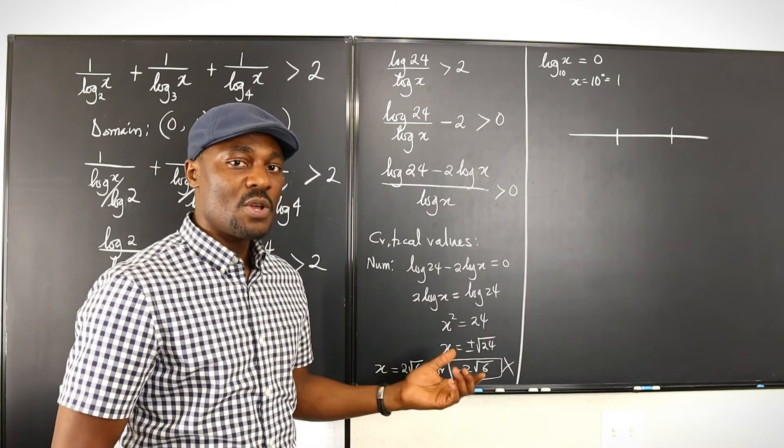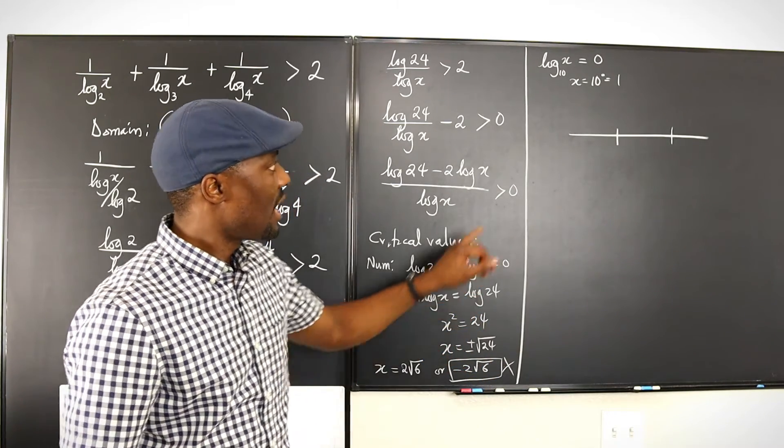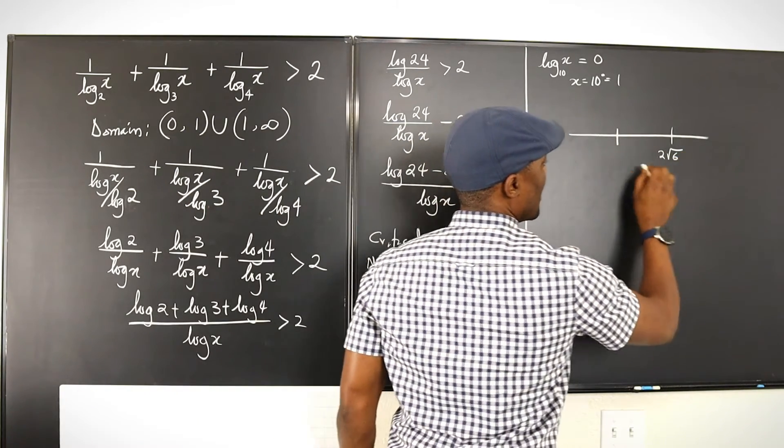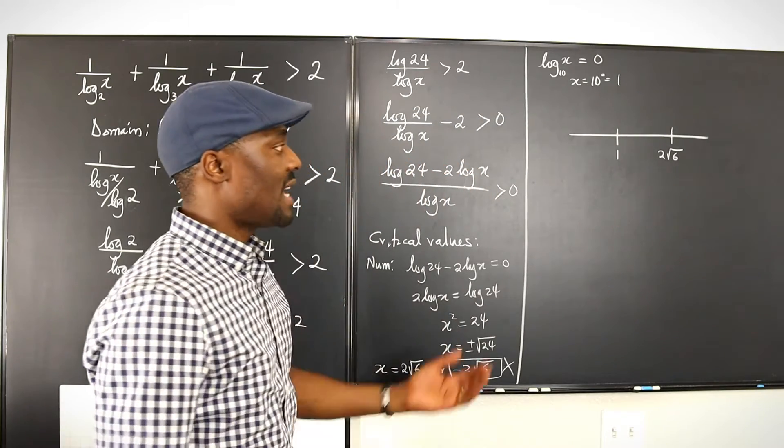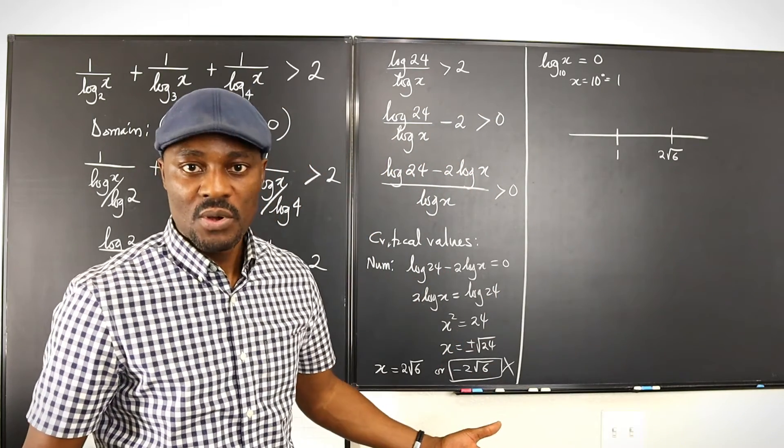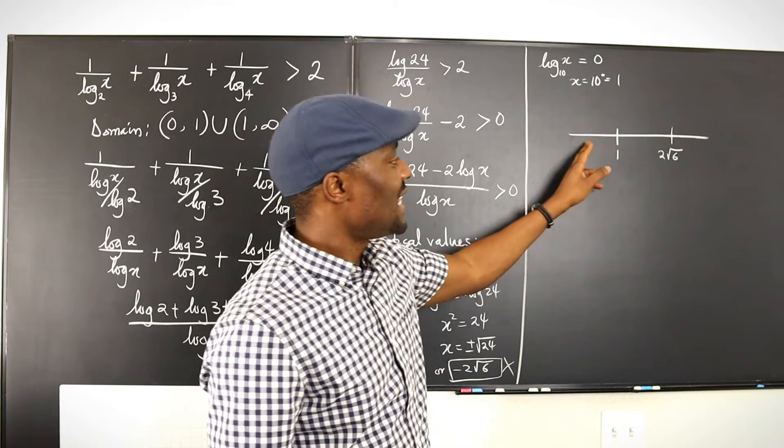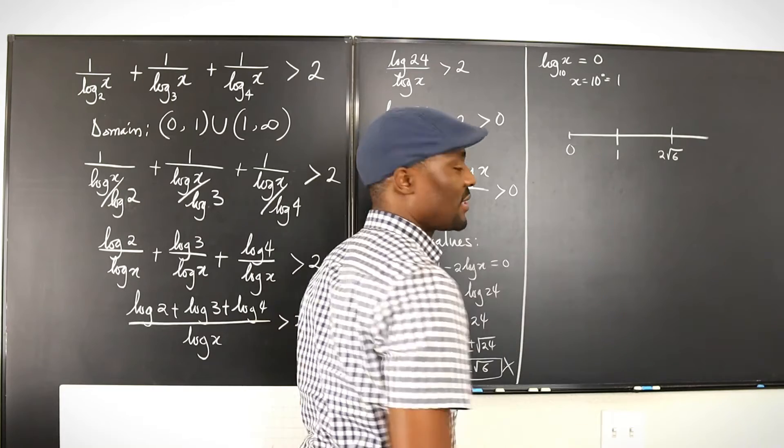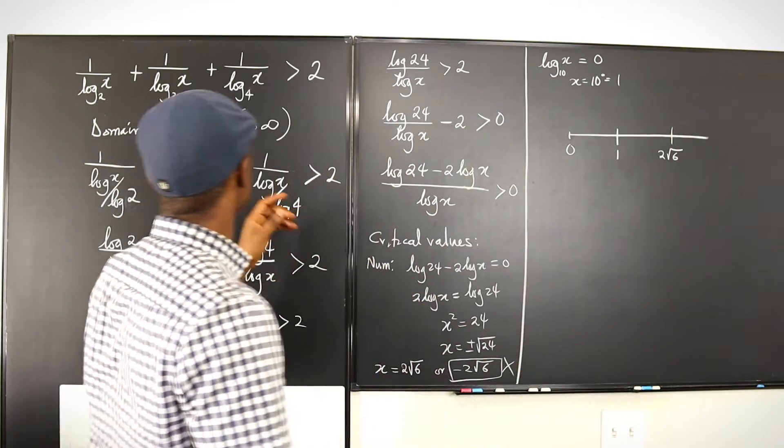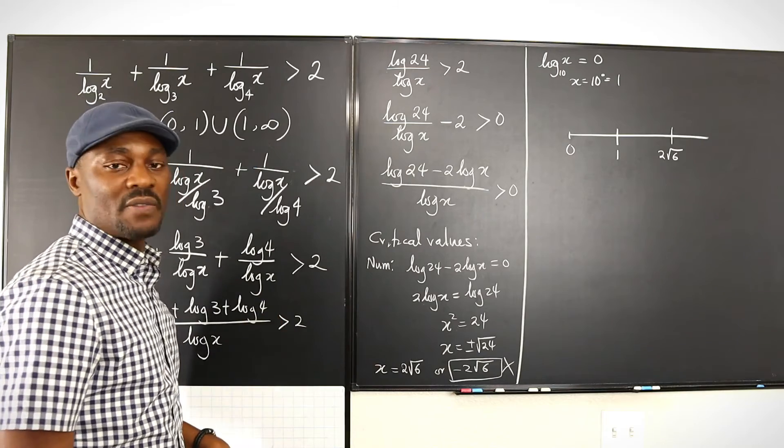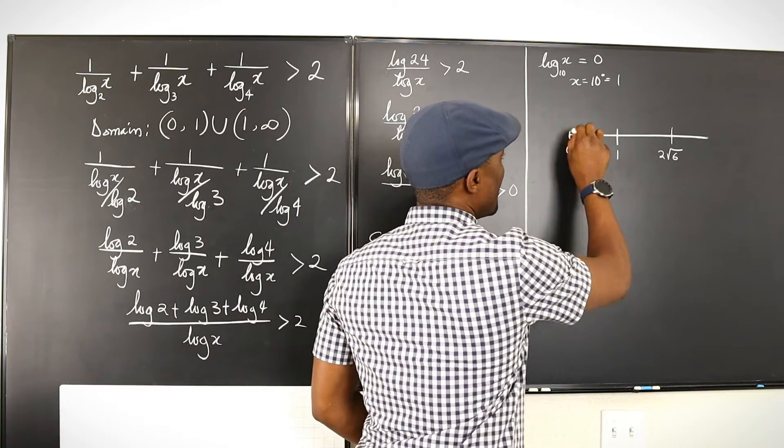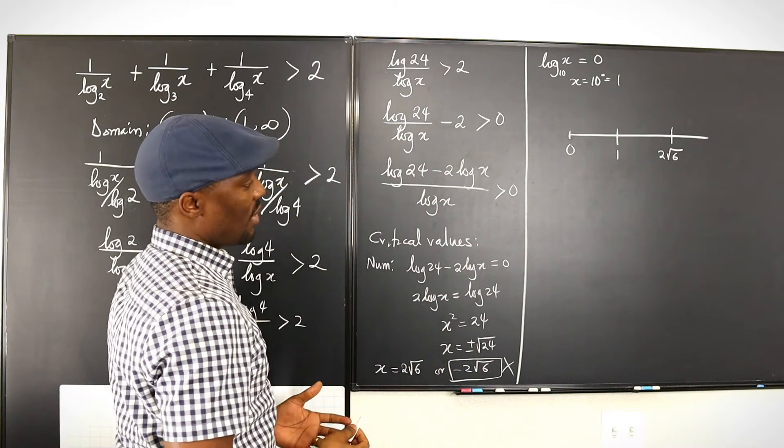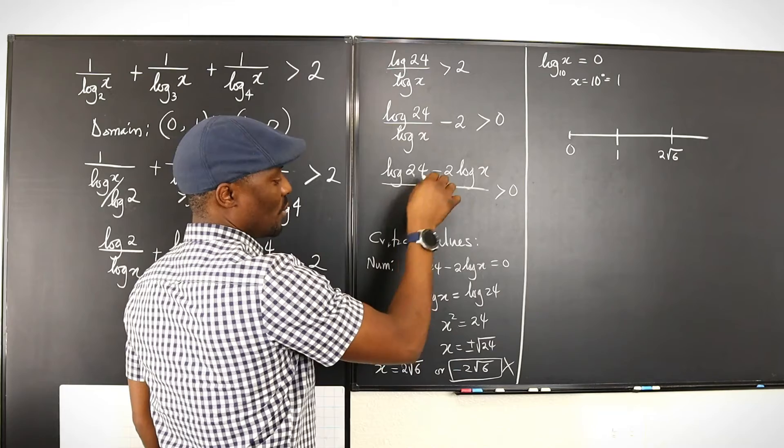We're going to plug in the critical values that we obtained, which are 2 rad 6 and 1. This is a bigger number, so this would be here: 2 rad 6 and this is 1. And we want to test regions and see what regions are possible. Remember that even if you go down this way, the farthest you can go is up to zero. So we might as well put zero. Now to the right, it continues to infinity. So let's test the regions. We go back to this function.